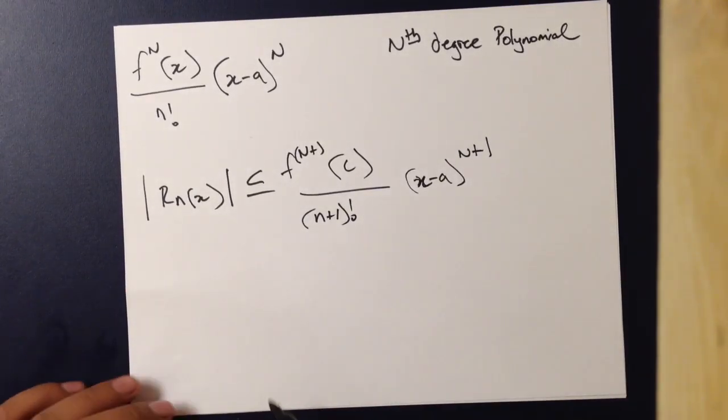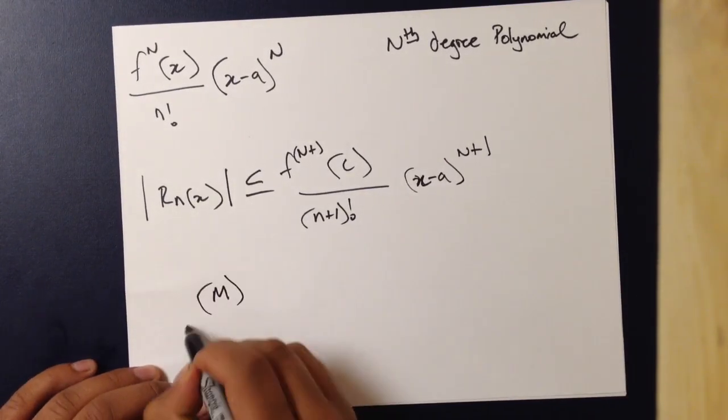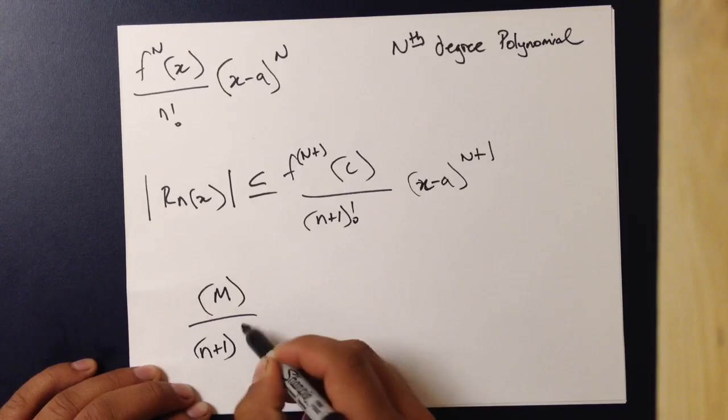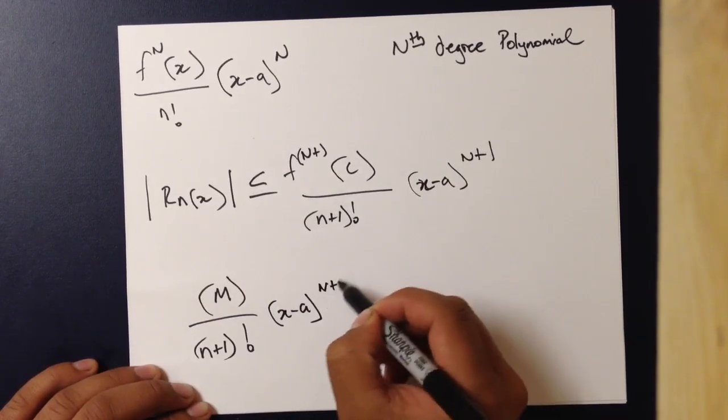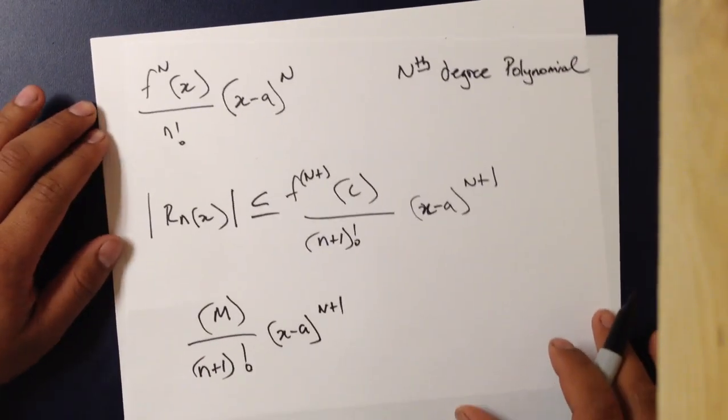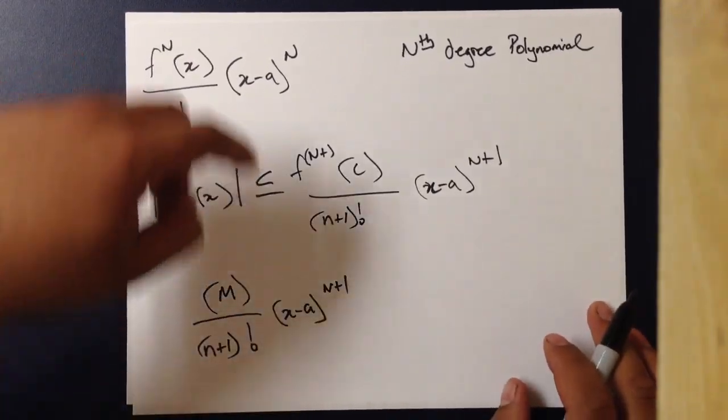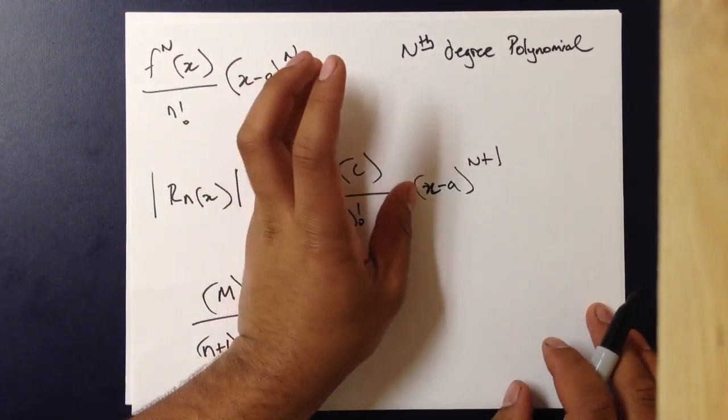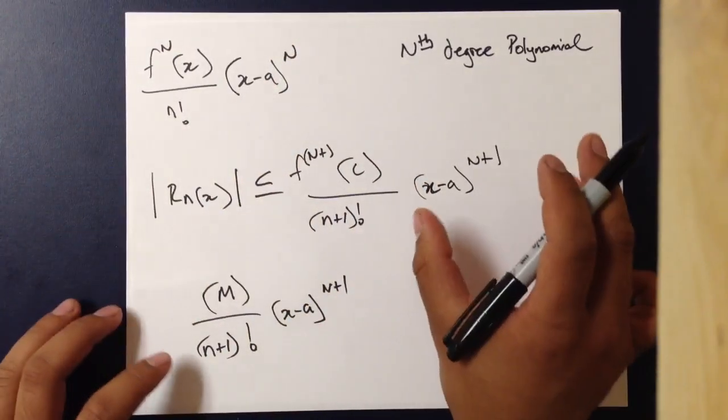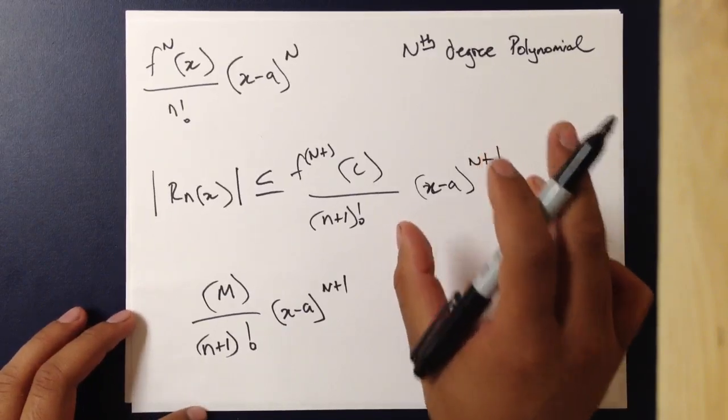Sometimes, you'll see this notated as m over n plus 1 factorial. There's x minus a to the n plus 1. And what this basically states is that the x value you plug in for the left-hand term can be different than the value for x that you plug in for the right-hand term.